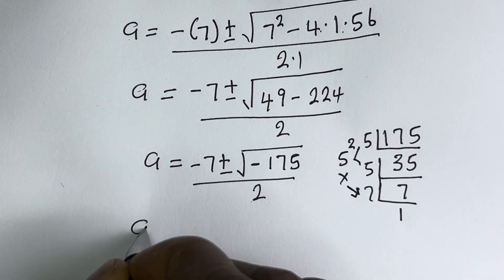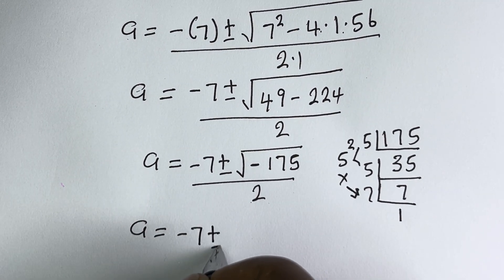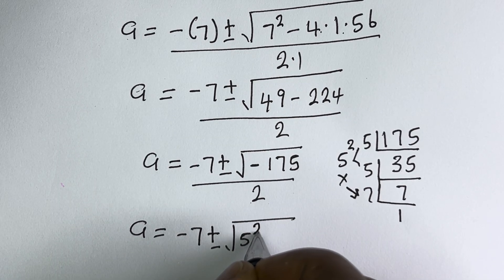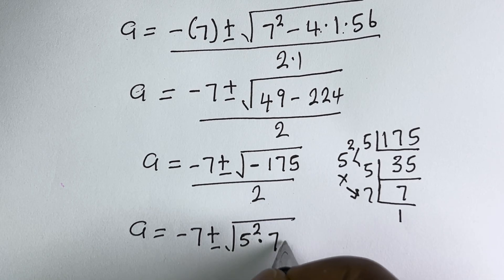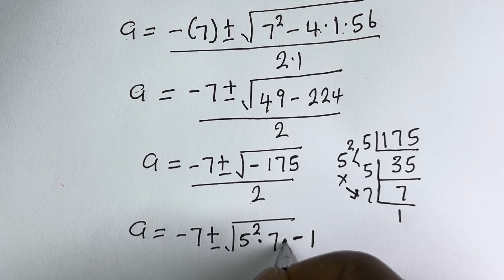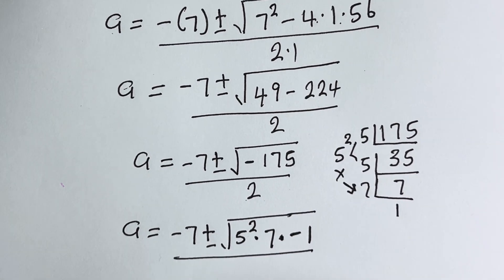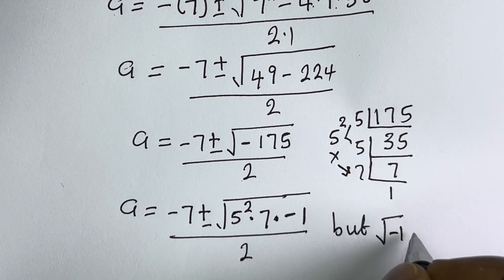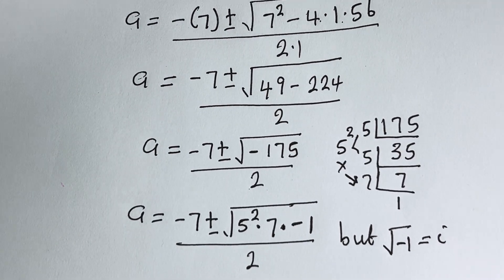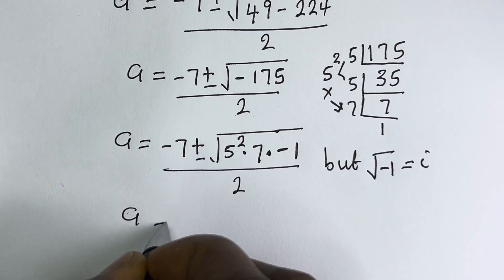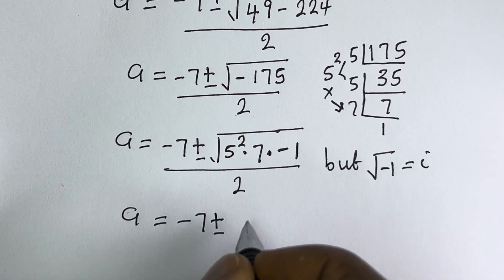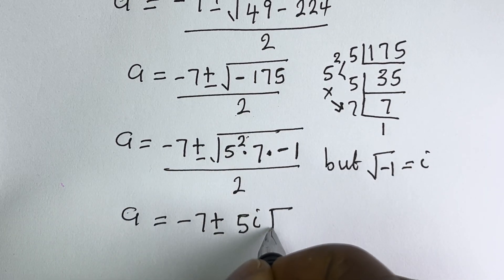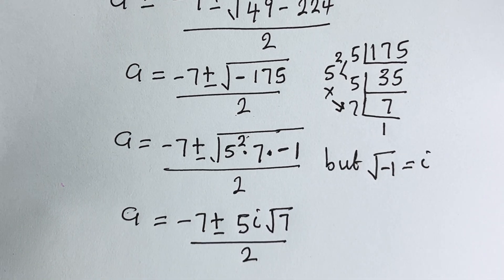So we have A equals minus 7 plus or minus square root of (5² × 7 × minus 1), all divided by 2. Since the square root of minus 1 is i, this becomes A equals minus 7 plus or minus 5i√7, all over 2.